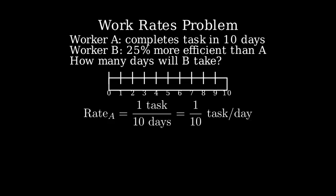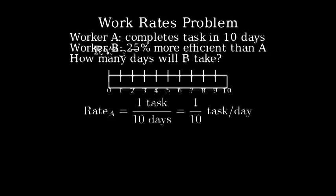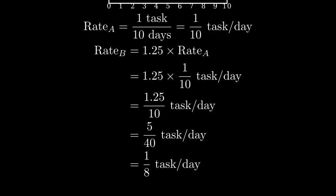Now, since Worker B is 25% more efficient, we multiply A's rate by 1.25 to get B's rate.